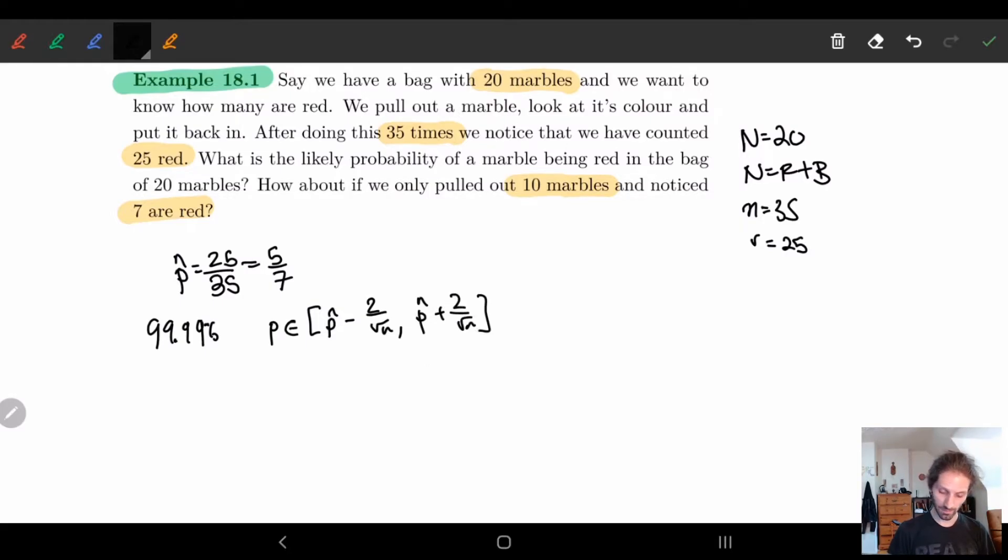Right? So let's plug these in. This is 5 sevenths minus 2 over 35 and then 5 sevenths plus 2 over 35.